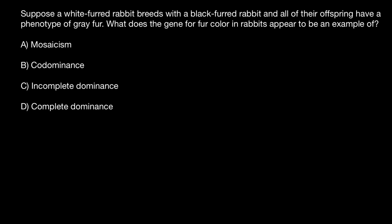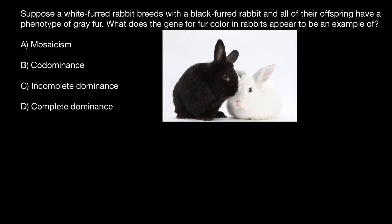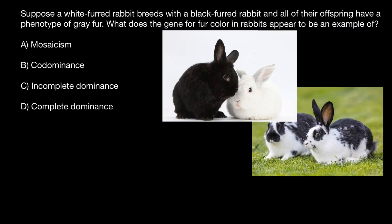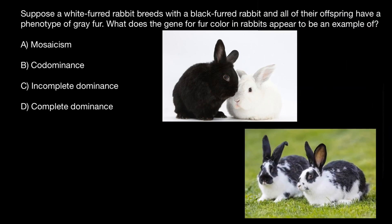Let me show how to solve this problem just using some pictures. This is probably going to be the best demonstration of different variants of inheritance. So here we have one parent who is black and another parent who is white. Now let's imagine that the progeny are all white and black — this is going to be an example of co-dominance.